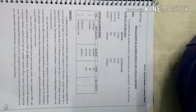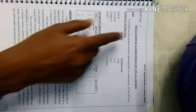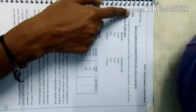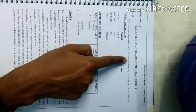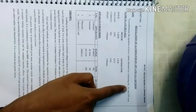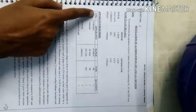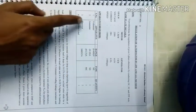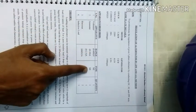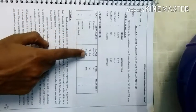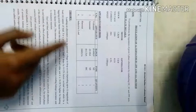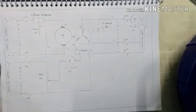Hi guys, in this experiment we are going to see about regulation of alternator by ZPF and ASA method. The aim is to predetermine the regulation of a given three-phase alternator by conducting OC, SC, and ZPF tests. Apparatus required: voltmeter 0 to 10 ampere MA, ammeter 0 to 2.5 ampere MC, rheostat 300 ohm 2 ampere.